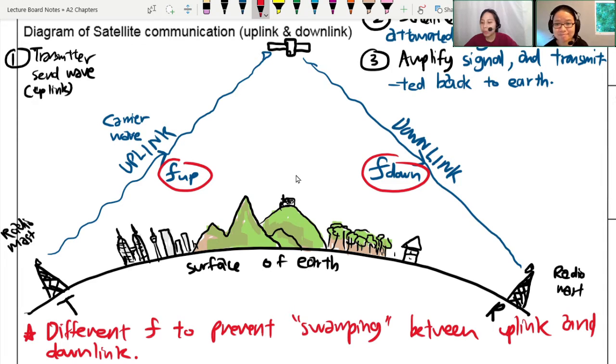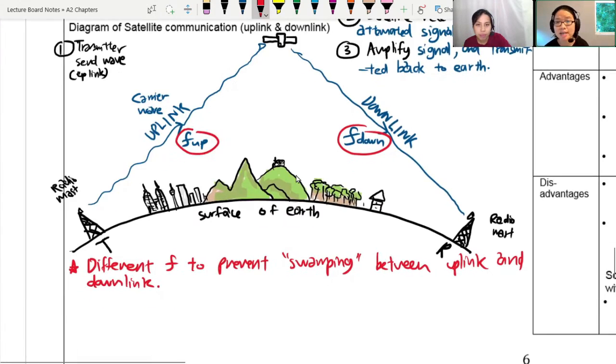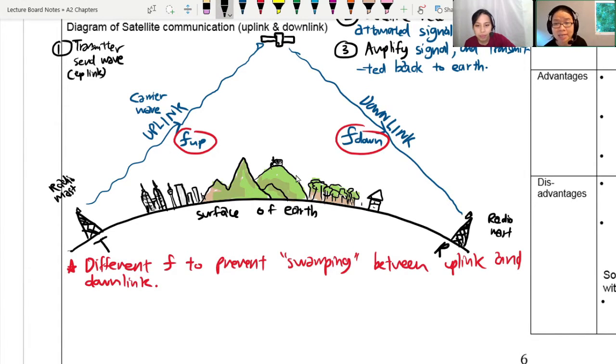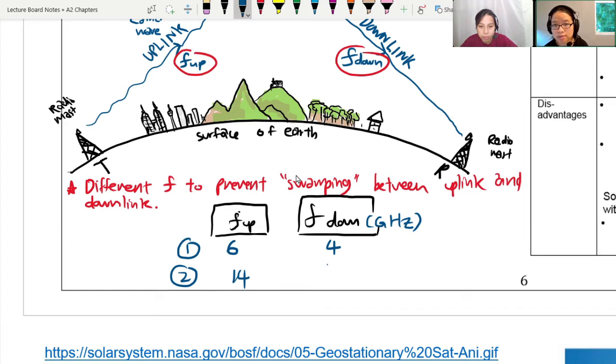Are there specific up and downlink frequencies? The regulators have decided that there are these few different options that you can use as uplink and downlink pairs. So you kind of have to memorize the pairs. The first option is to have 6 GHz as uplink and 4 GHz as downlink. Second option is 14 as uplink, 11 as downlink. Third option is 30 as uplink, 20.